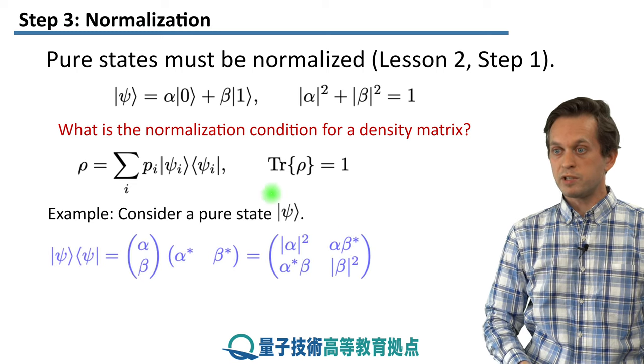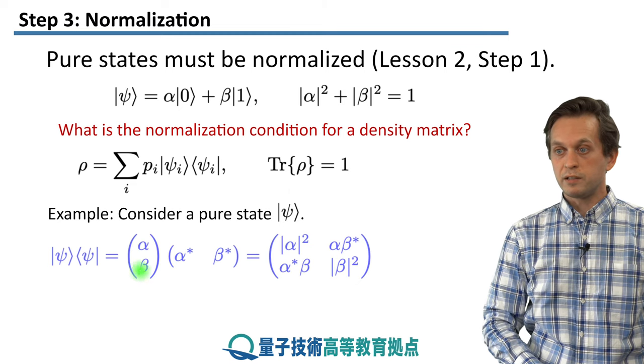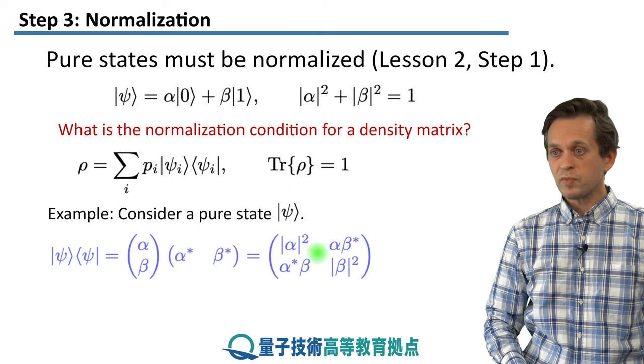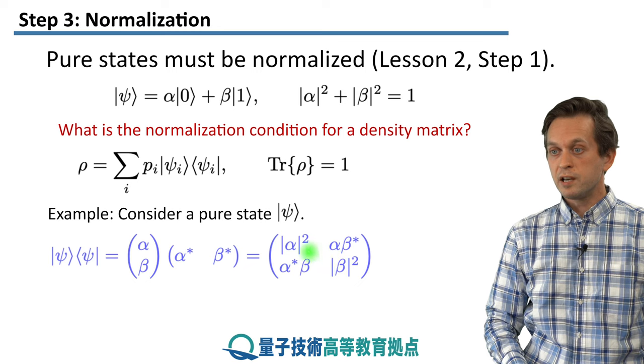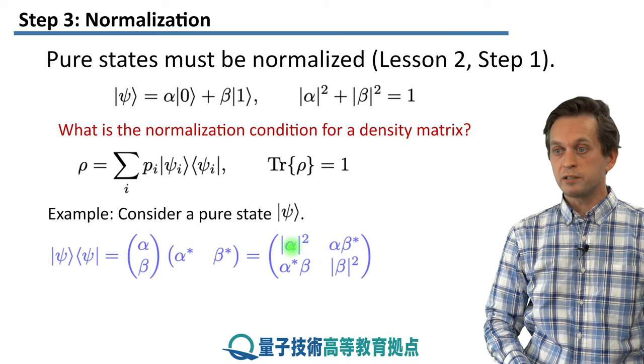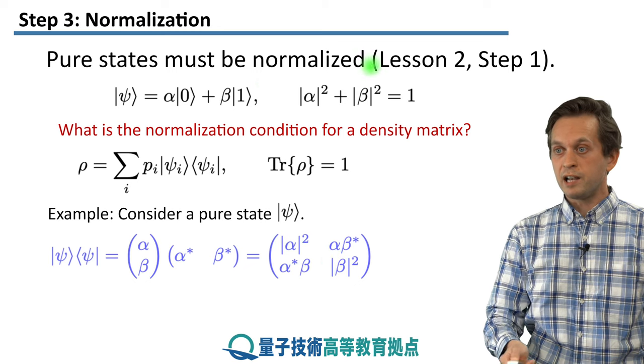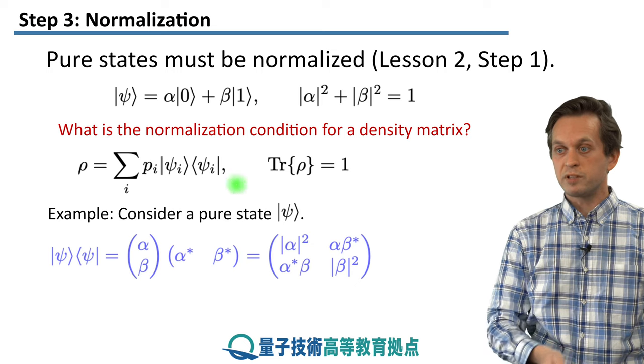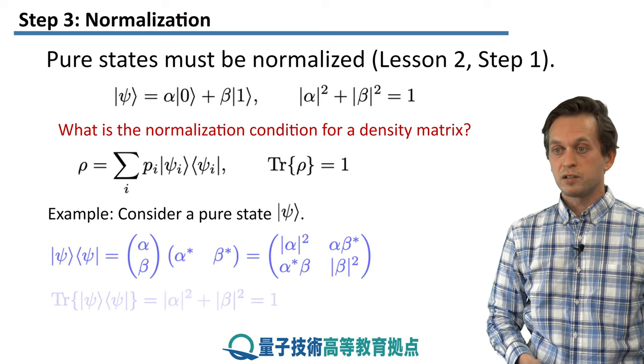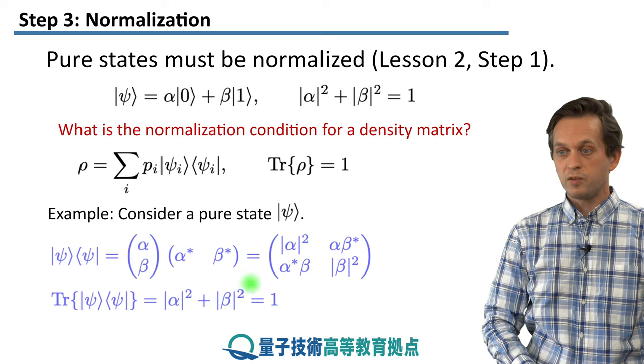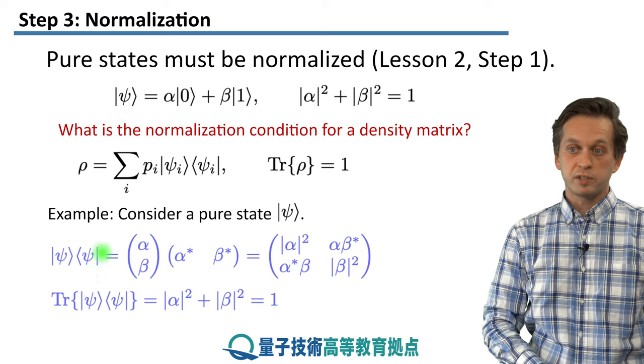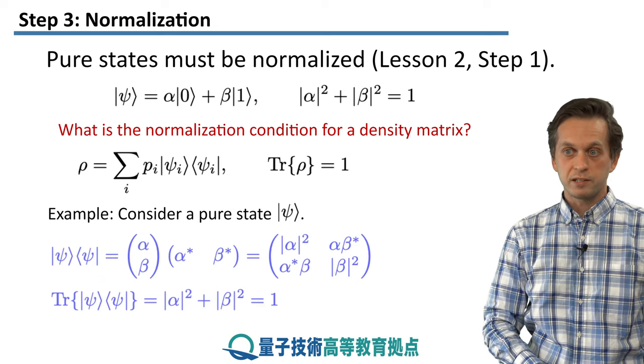Let's see that on an example. Let's consider our pure state over here. We write it in the matrix form. And you can immediately see that the elements that appear on the diagonals are actually the elements that appear here in this pure state description. And if we take the trace, we sum them up, and we get 1. Because we started with a pure normalized state.